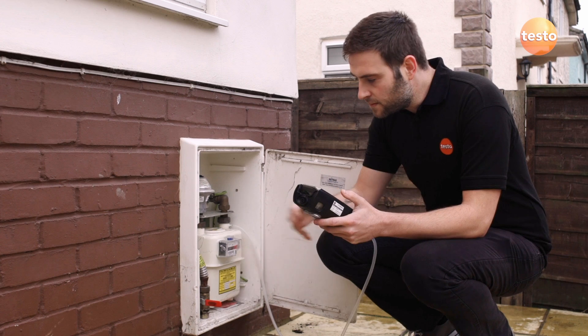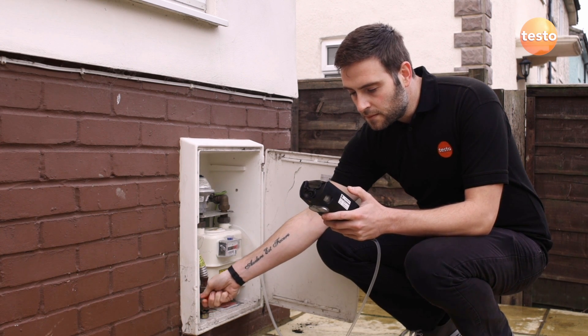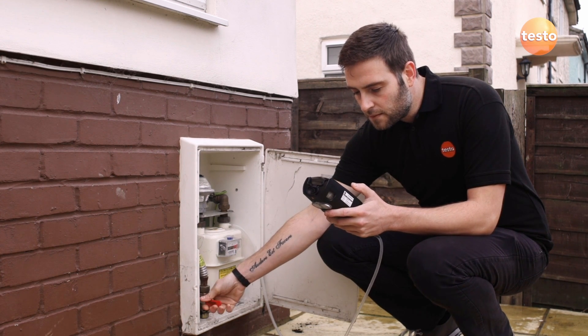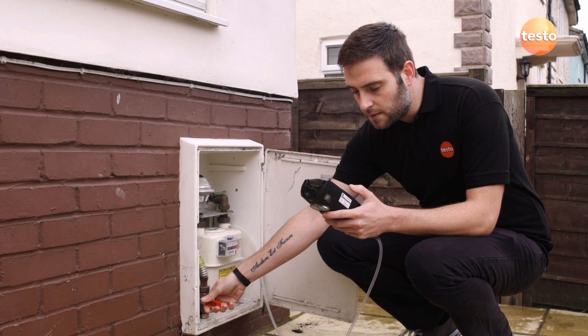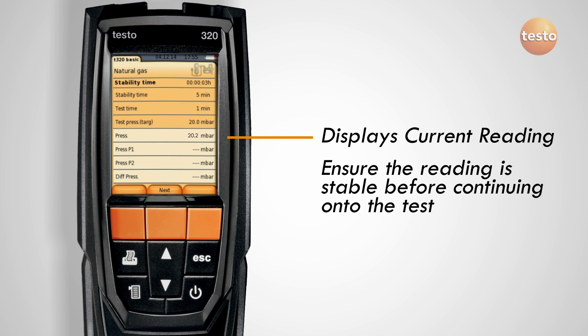Again, open and close the gas valve and use the blue gas relief valve to set the target pressure, then start the stabilization timer. Ensure the reading is stable before proceeding with the tightness test.